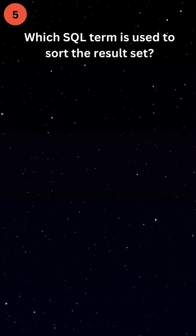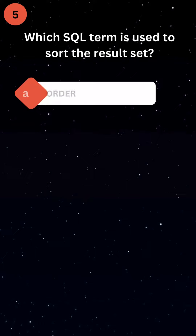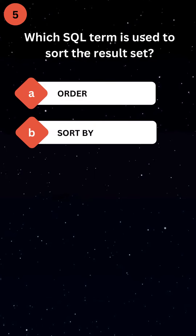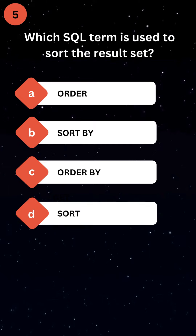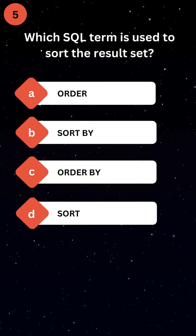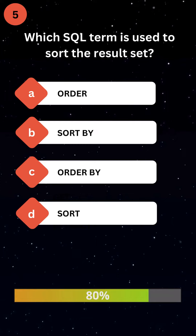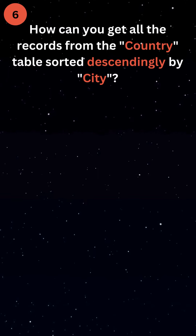Which SQL term is used to sort the result set? How can you get all the records from the country table sorted descendingly by city?